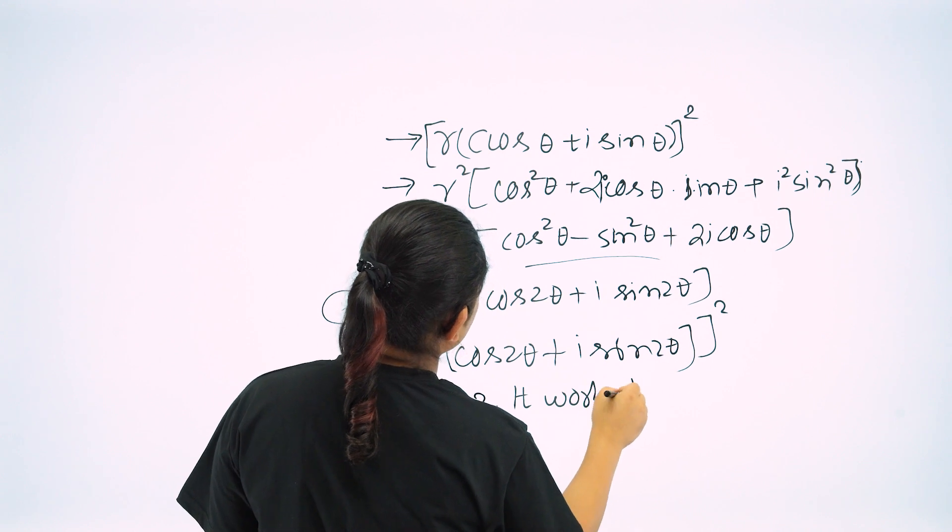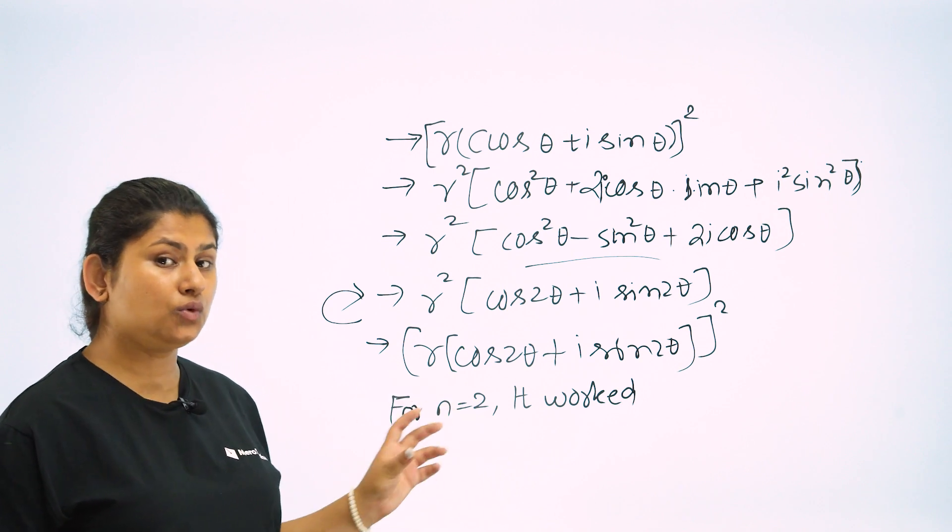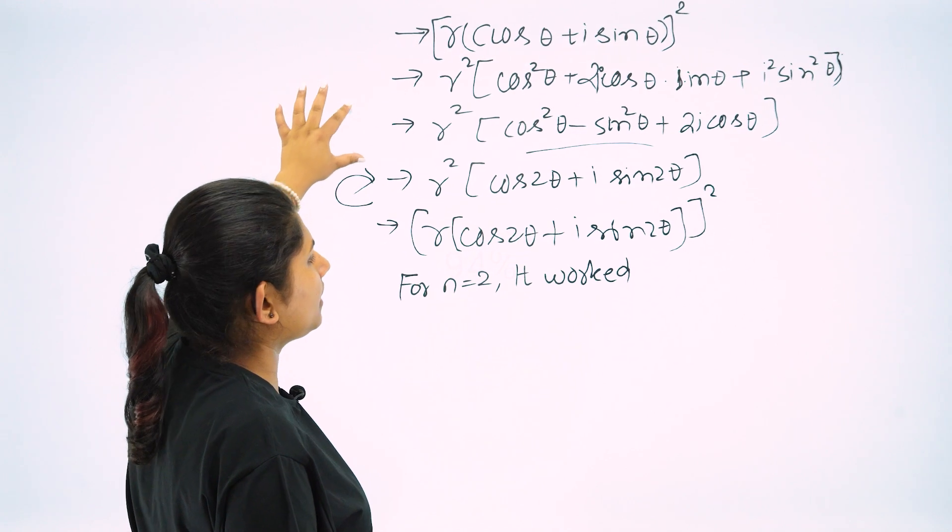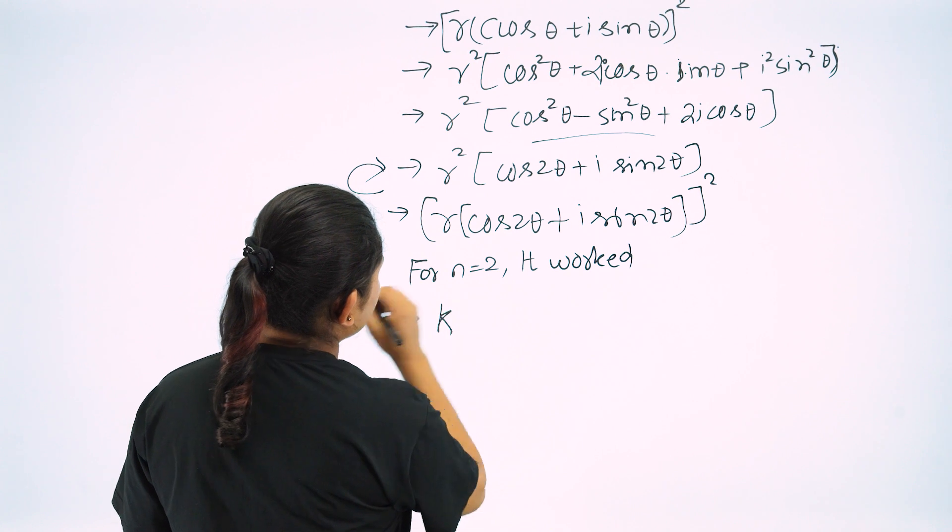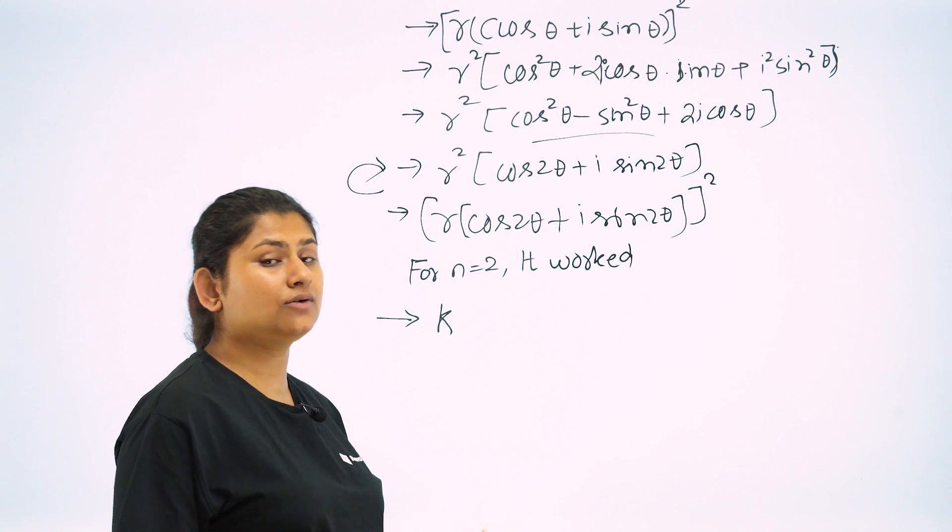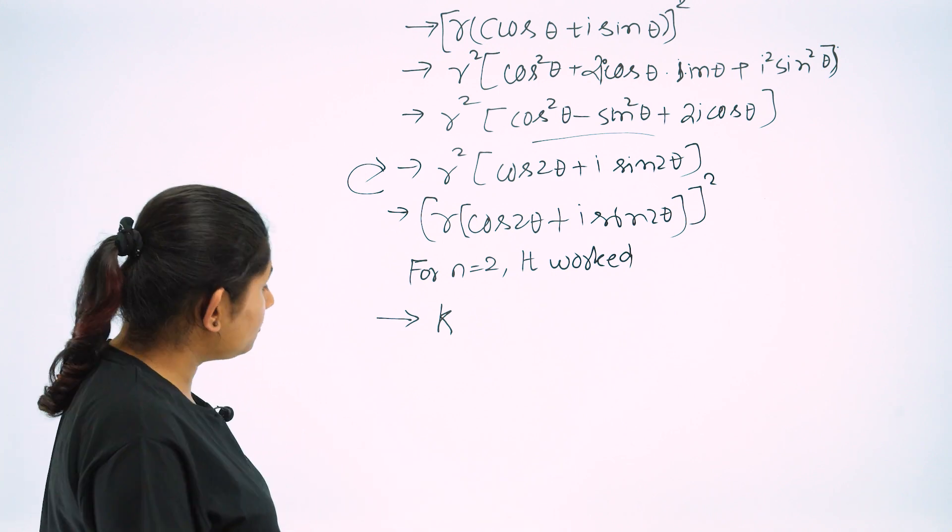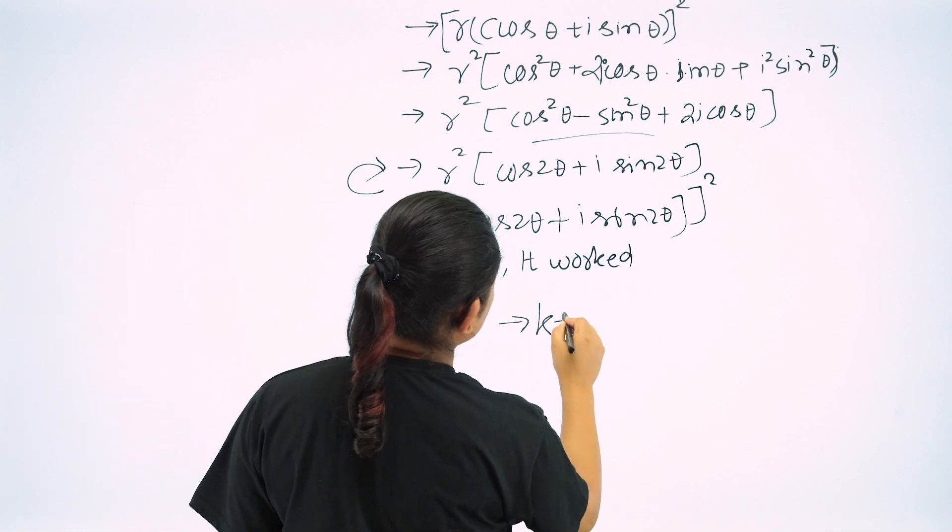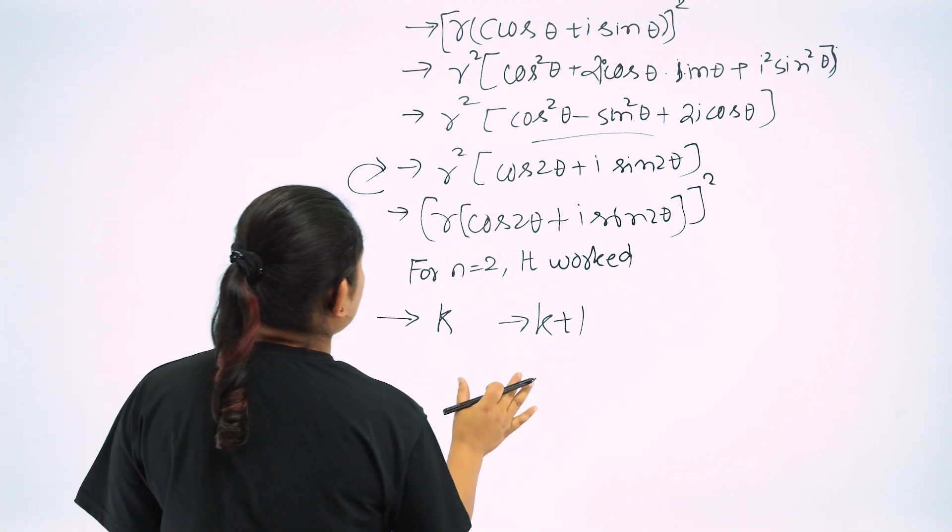So what do we do? We do n is equal to 1, n is equal to 2. What do we understand from here? If the number is equal to k, then we do n is equal to k plus 1. That is the mathematical induction method.